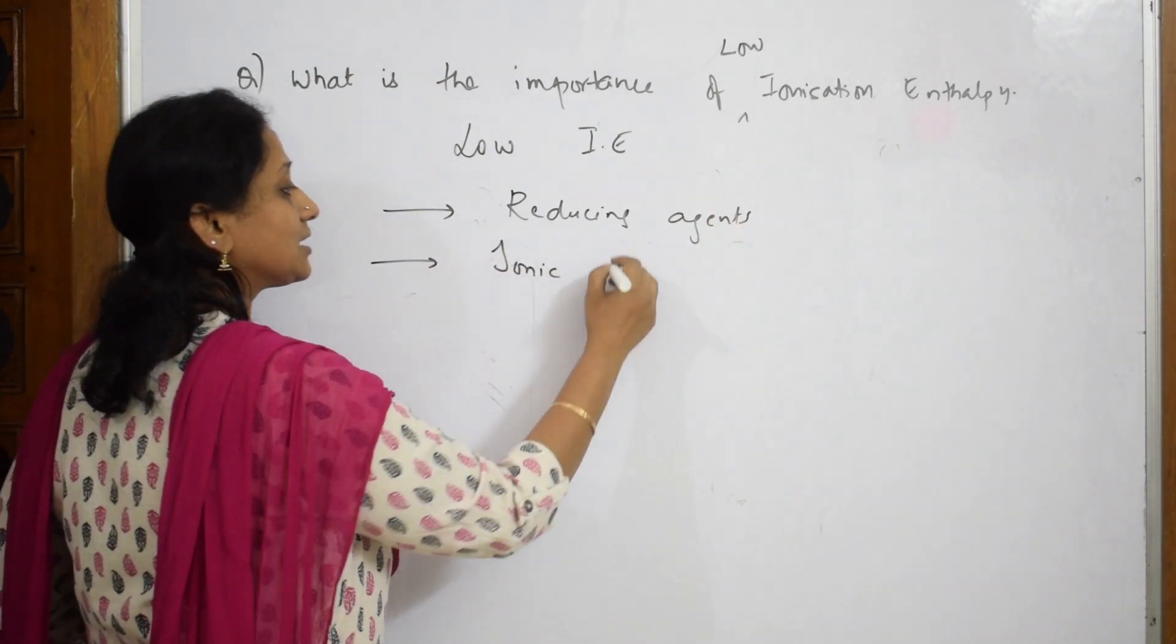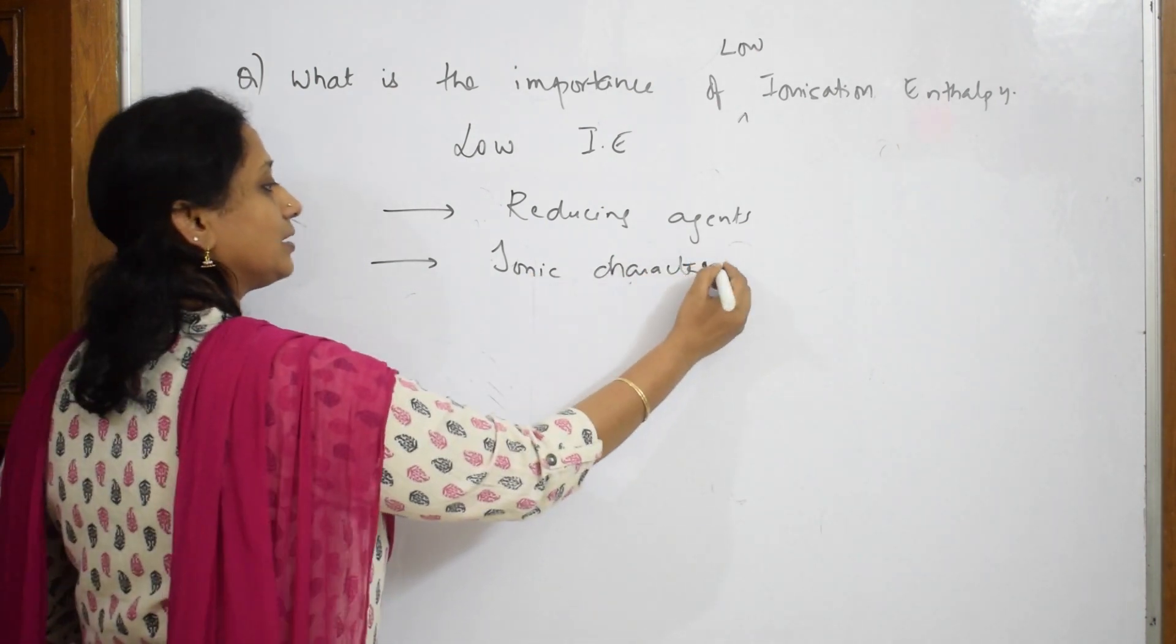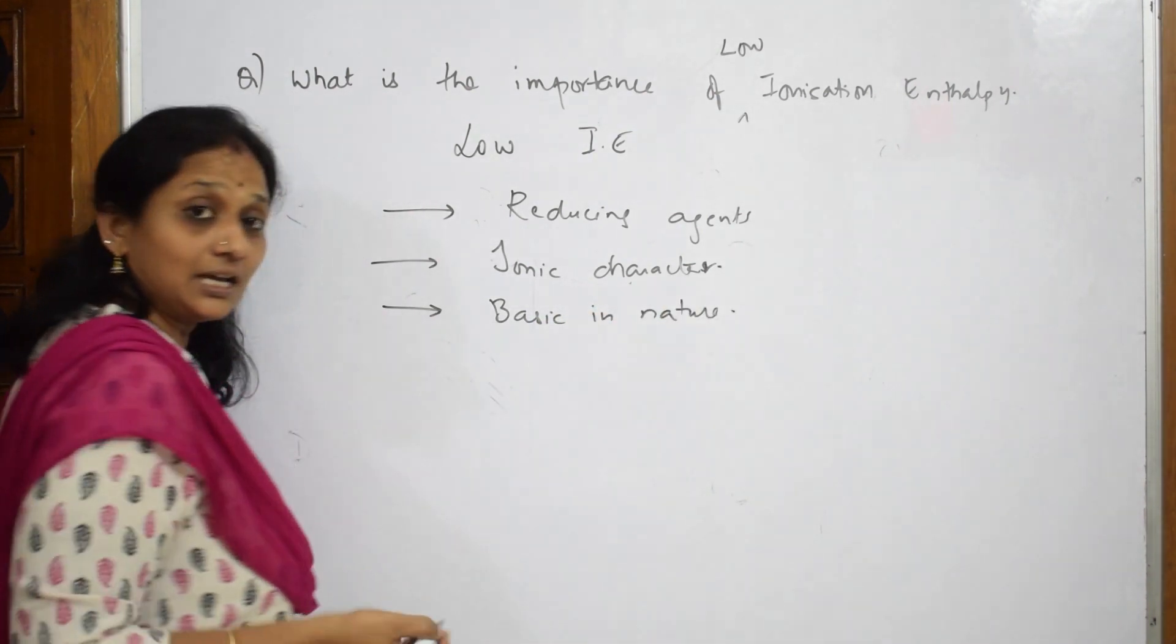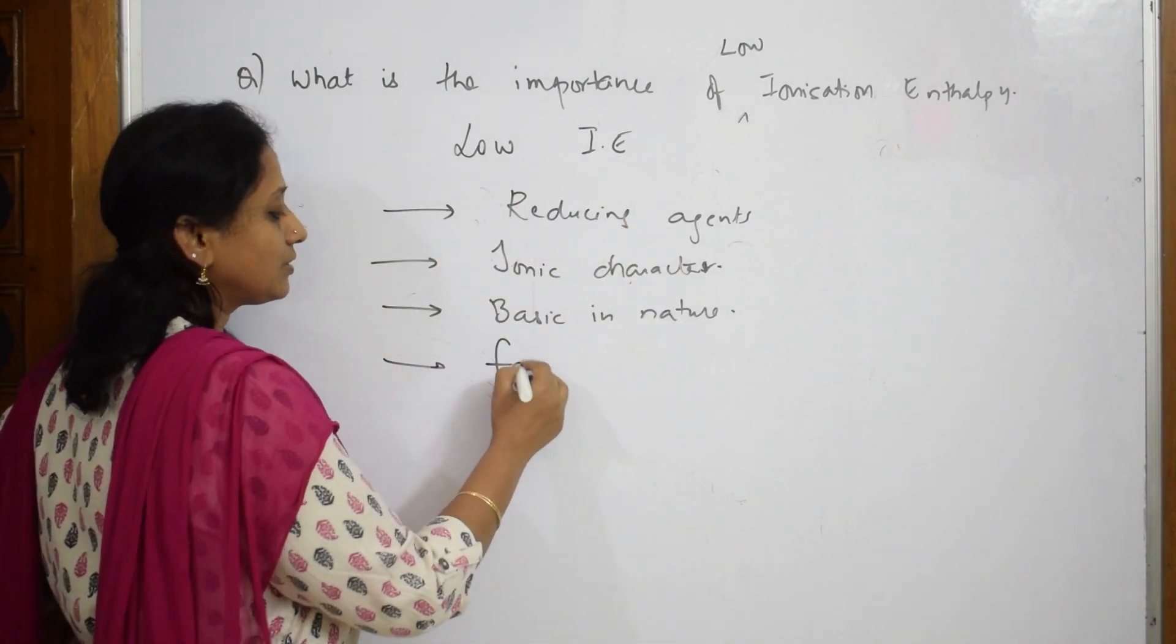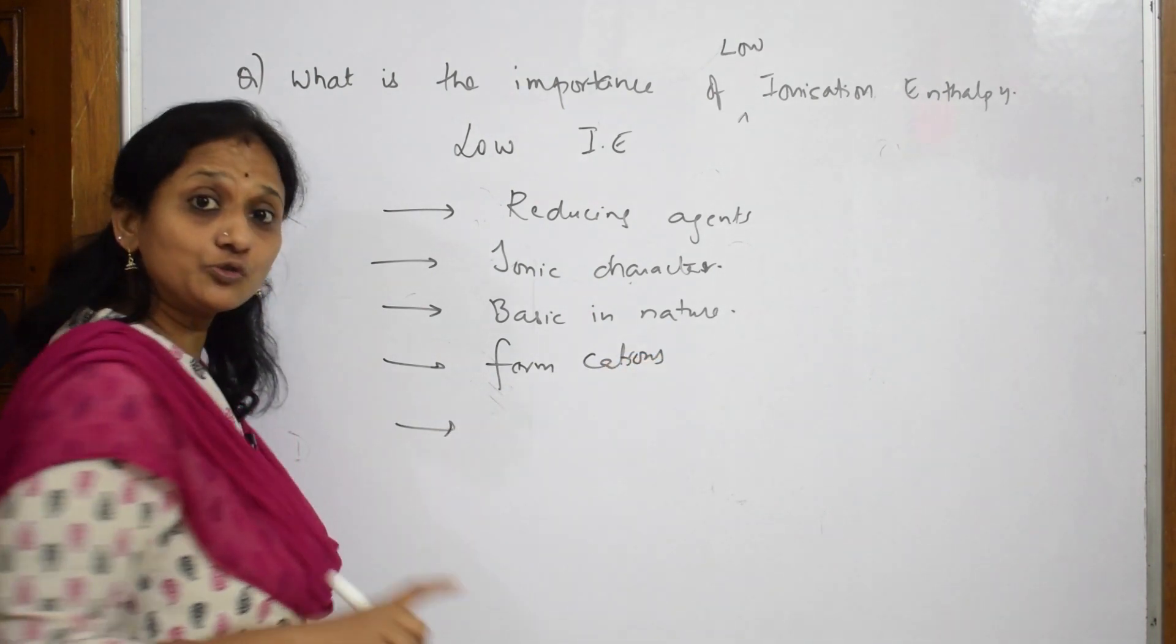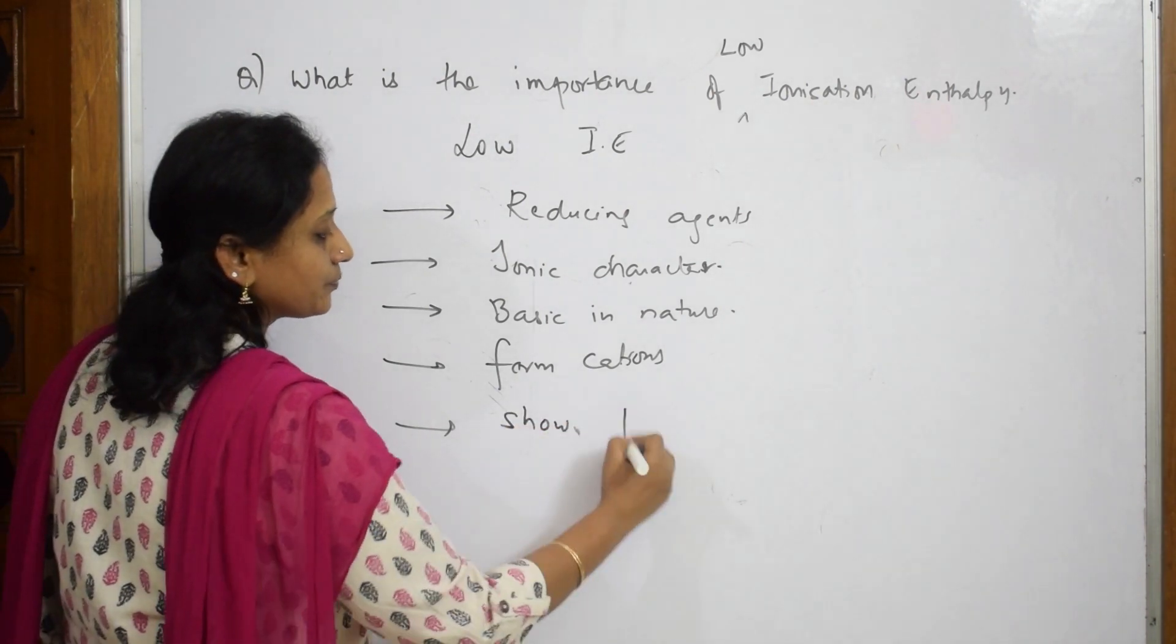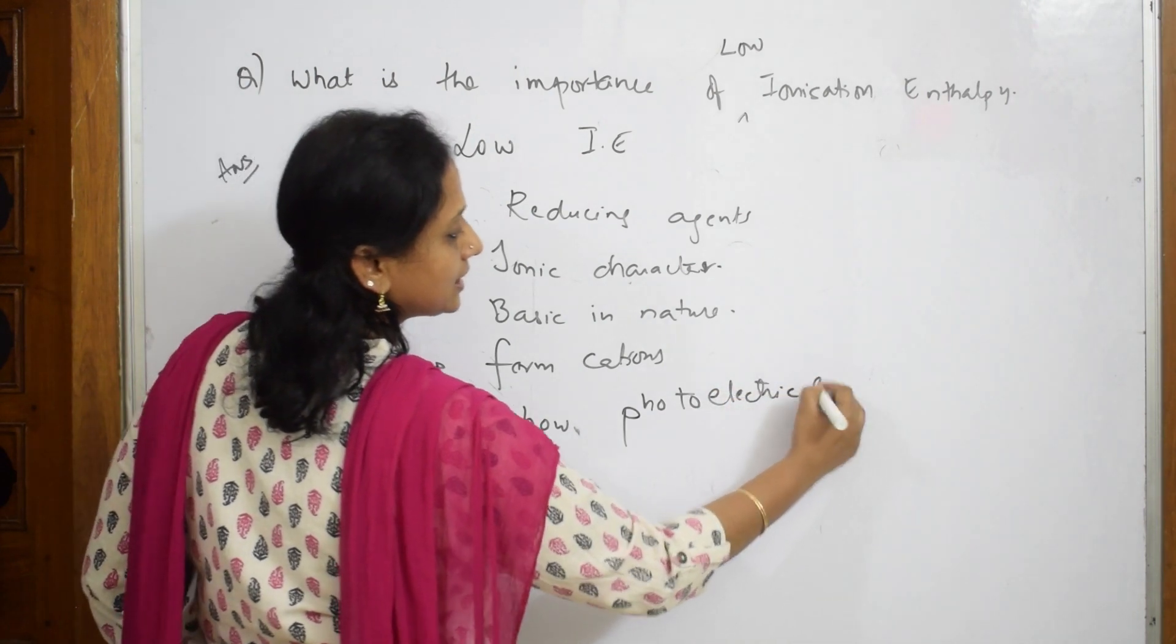They possess ionic character and are mostly basic in nature. They form cations because I'm taking out one electron. Next, they show photoelectric effect because I can take out that electron easily.